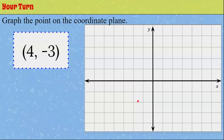Now it's your turn. I would like you to graph the ordered pair (4, -3) on the coordinate plane. Go ahead and pause the video now and come back and hit play when you're ready.